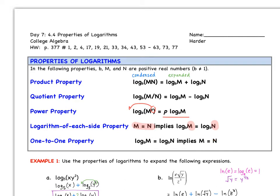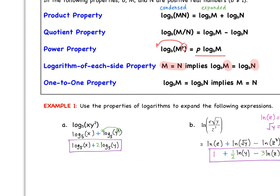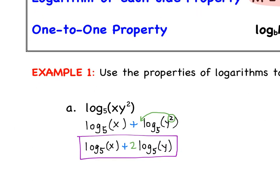We're going to use these properties to expand the following expressions. In the first example, we have log base B of X times Y squared. Using the product property, we split it into log base B of X plus log base B of Y squared. Then applying the power property, the exponent 2 moves out front as a coefficient, giving us the final answer: log base 5 of X plus 2 times log base 5 of Y.